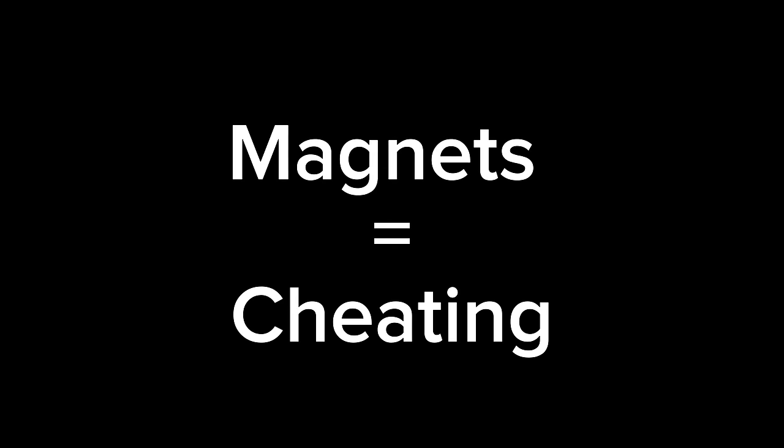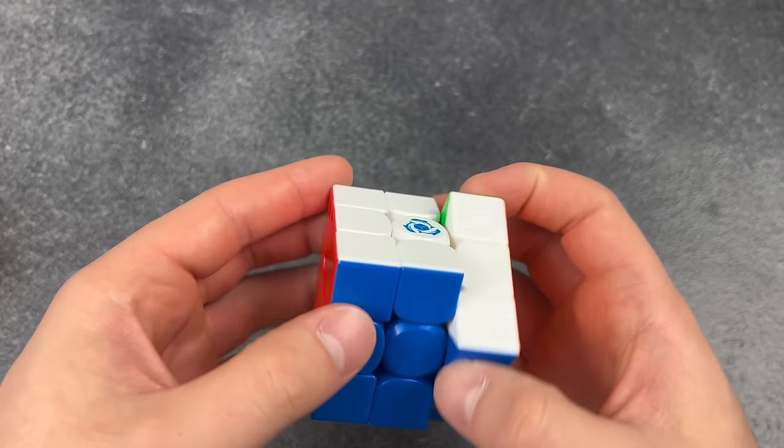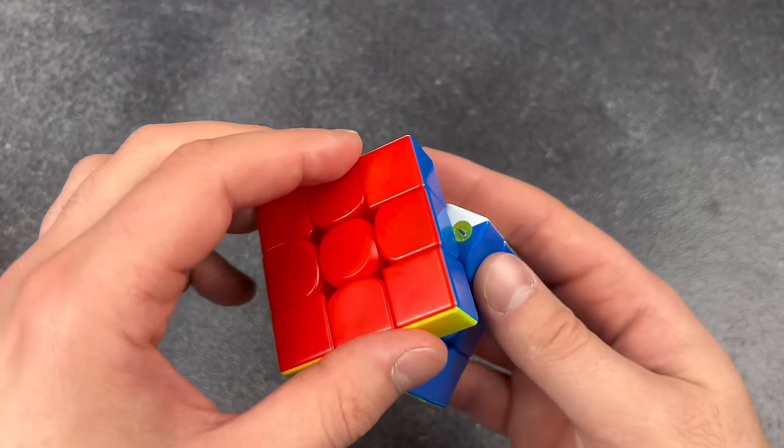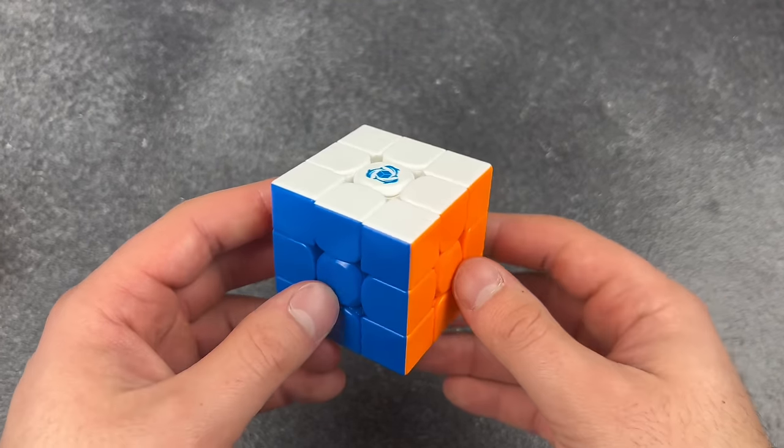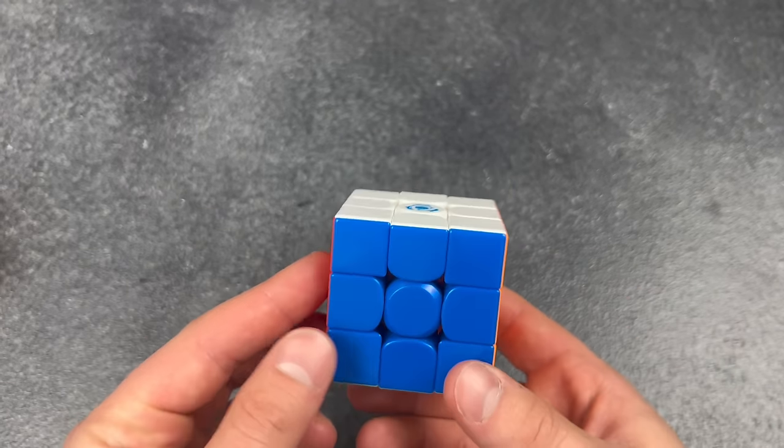Magnets means you're cheating. So you can see the magnets in the edge pieces here, which is really cool. Dude, that's so cheating, the magnets, are you kidding me? I could solve that now. All right, give it a shot.